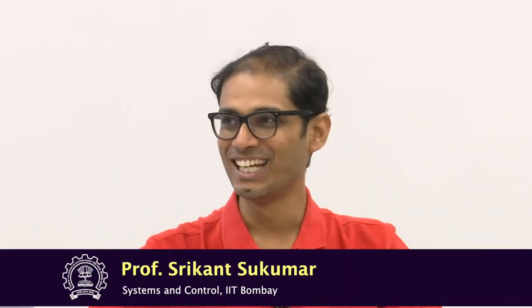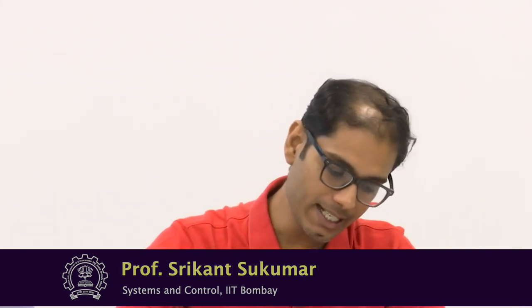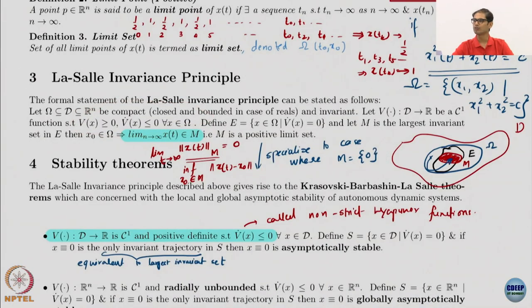Very complicated statement, I understand. I have tried to make a picture that may or may not help you. So what are the ingredients? These ingredients are pretty simple. We are used to this kind of V is positive semi-definite, V dot is negative semi-definite for x in some set. What are the sets?